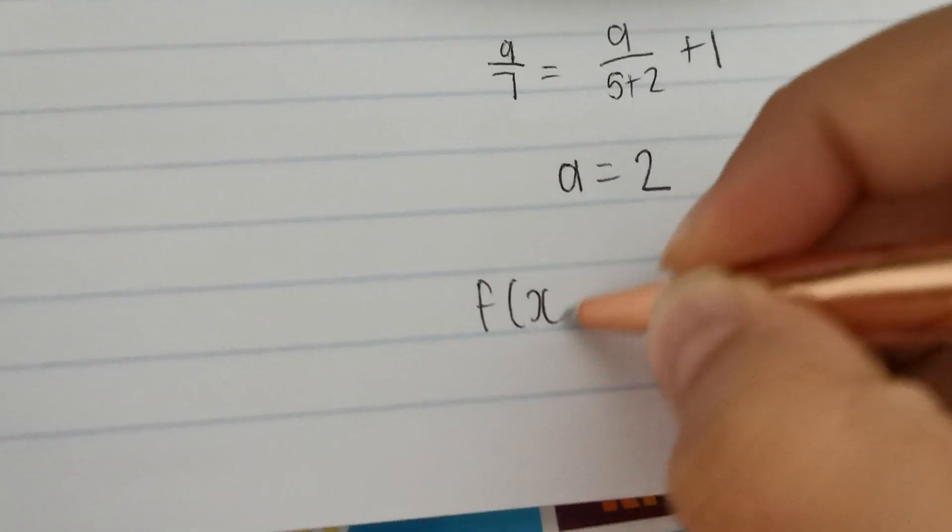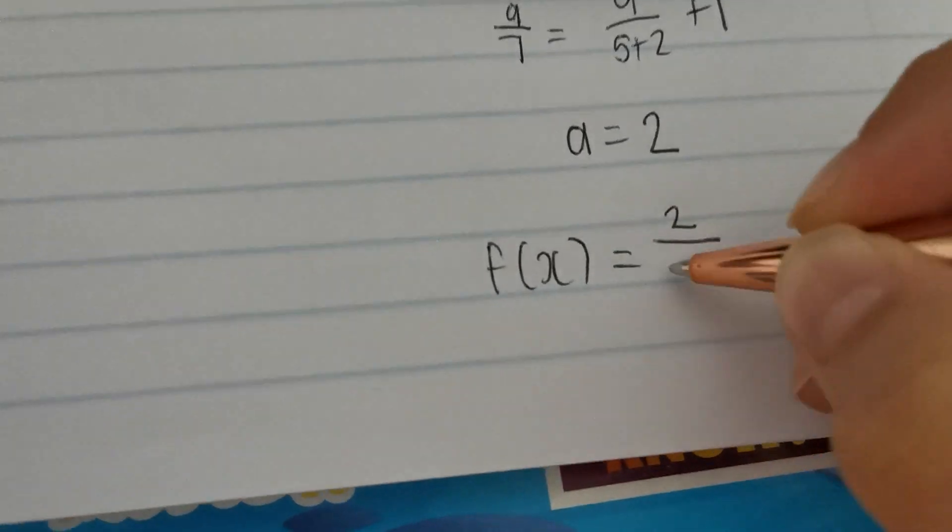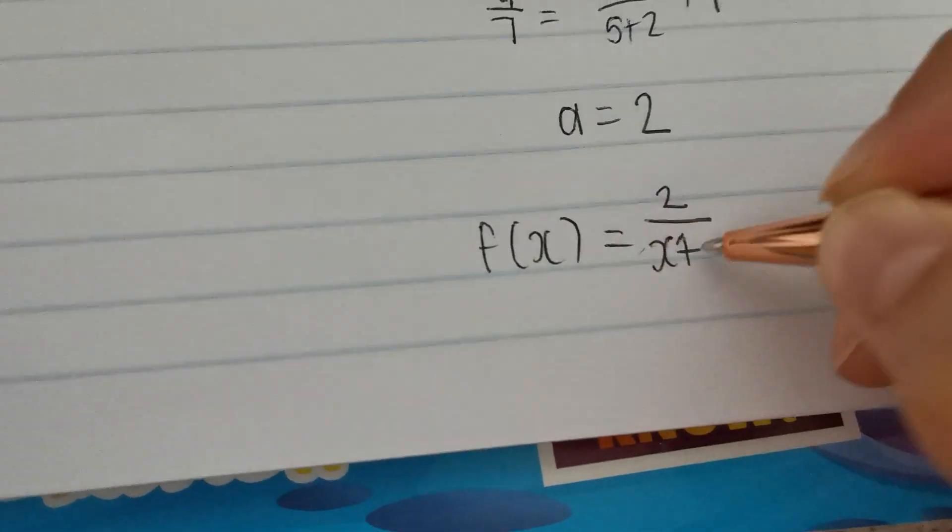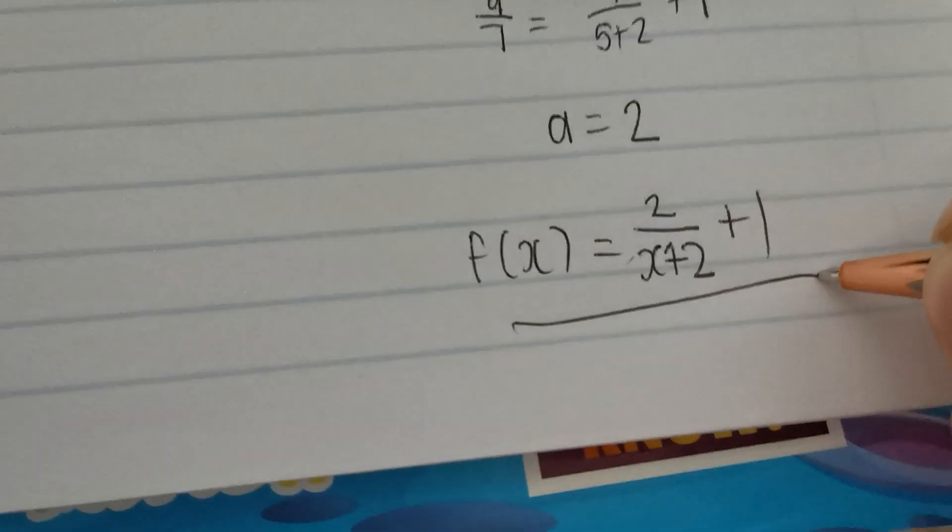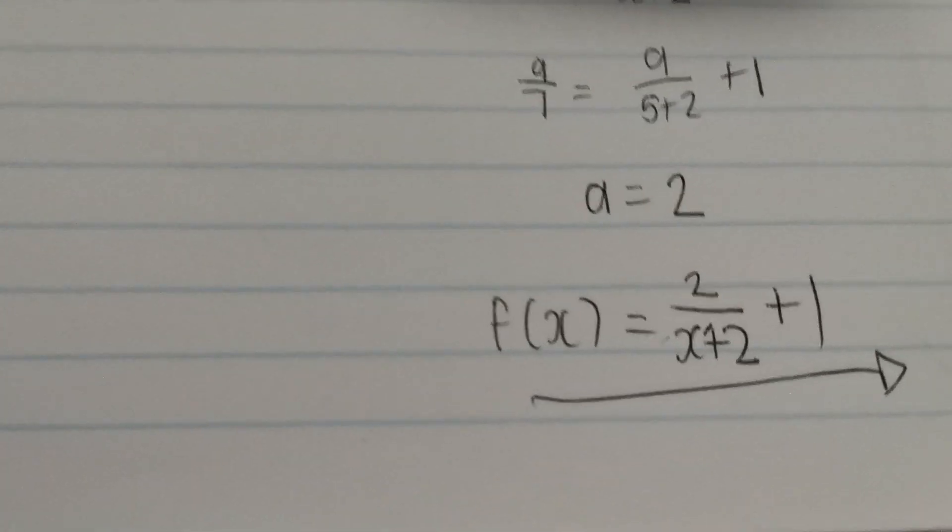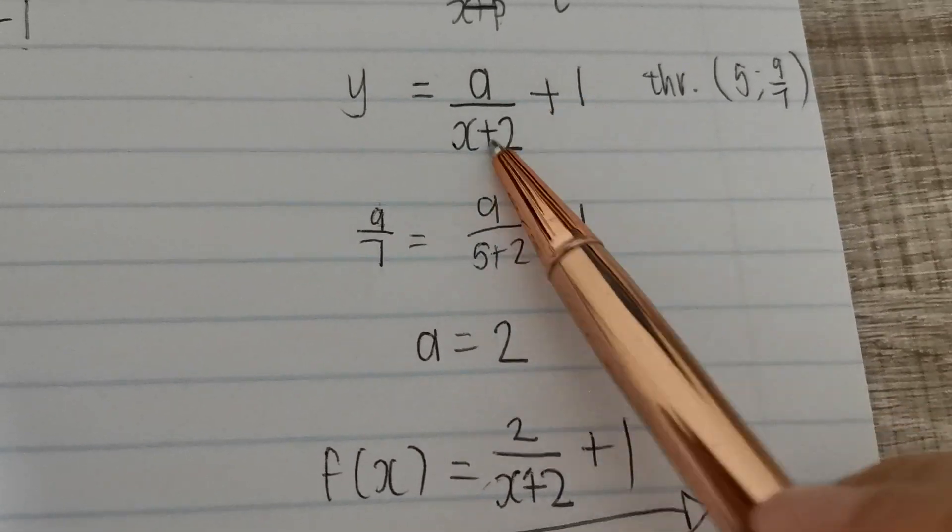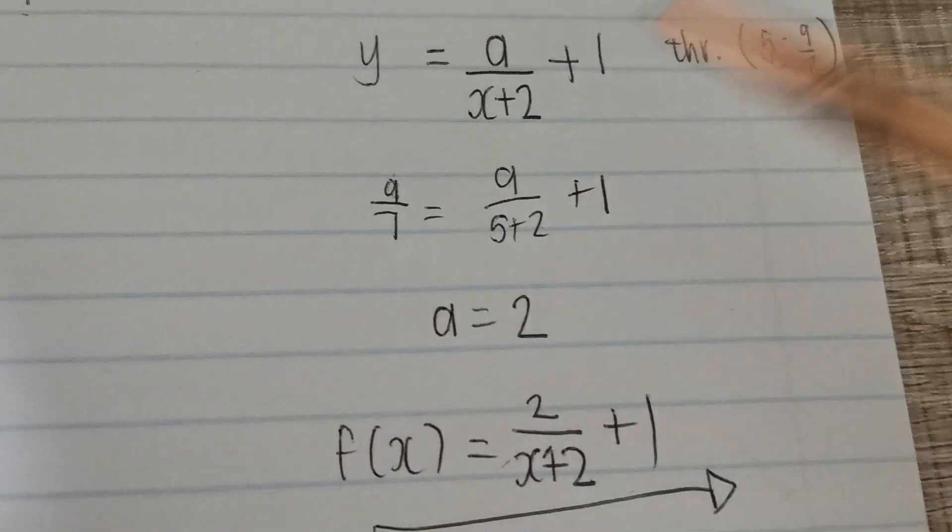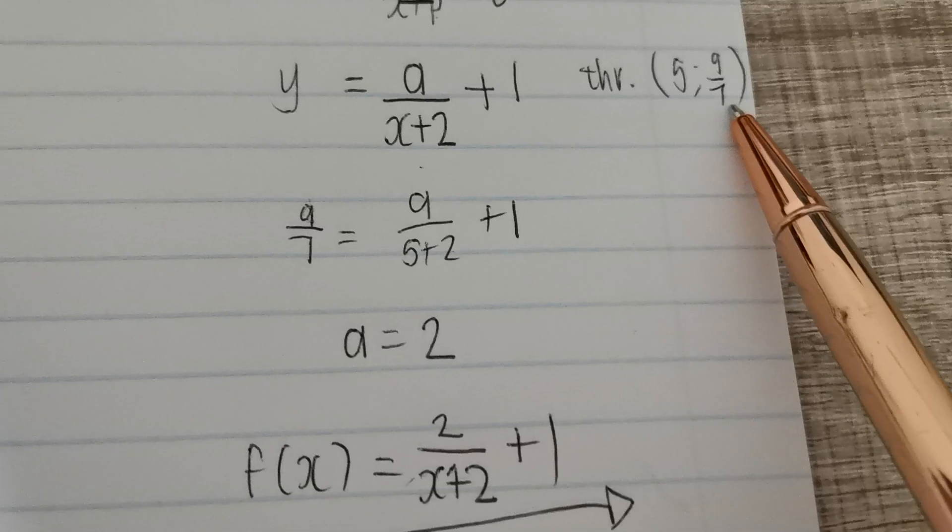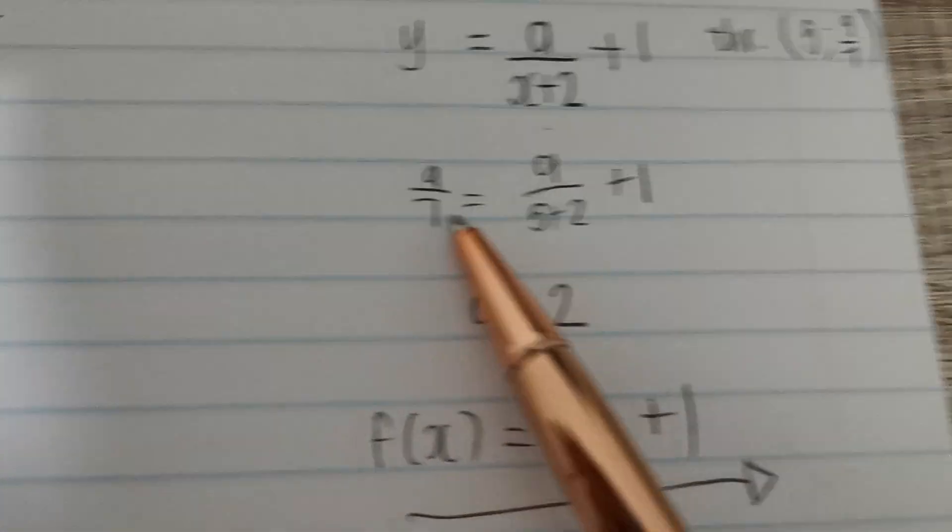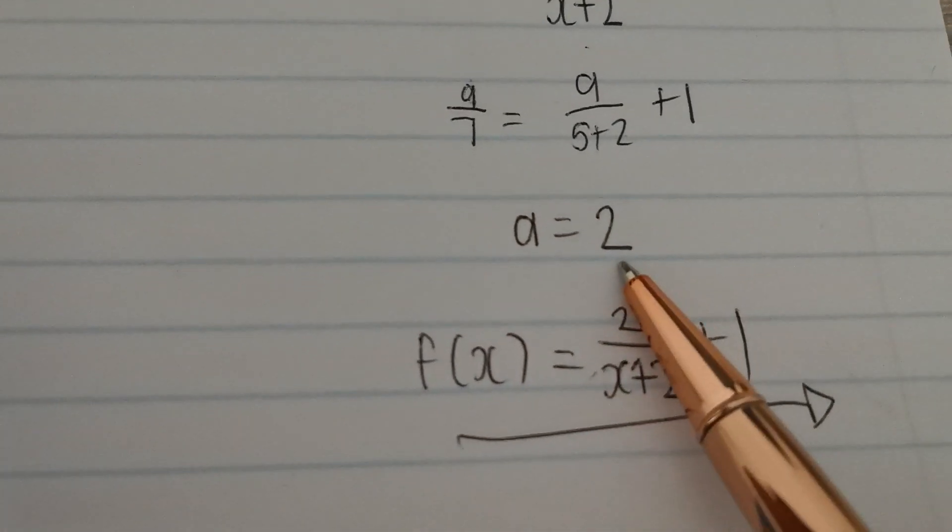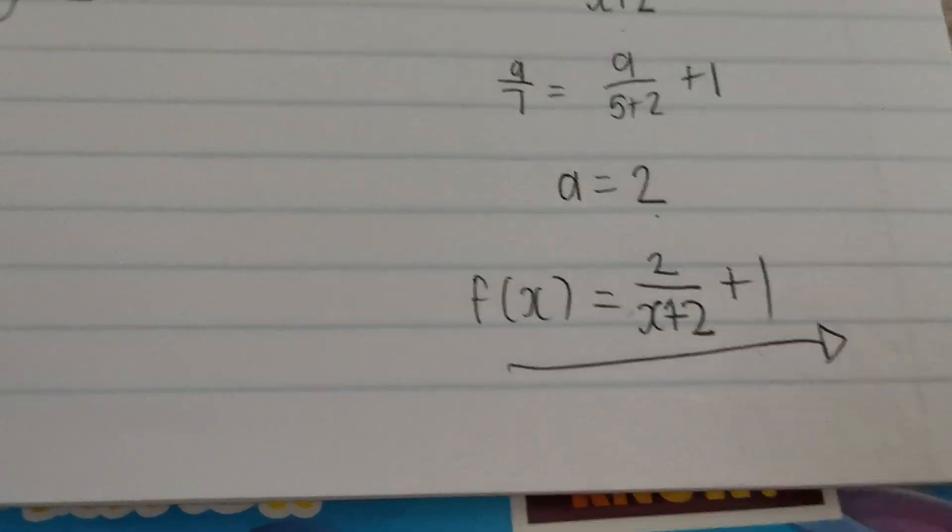And then you write down your equation. F over x is 2 over x plus 2 plus 1. That's what I mean by finding the equation. Let's recap quickly. Sub in the equations of the asymptotes into their places, or the asymptote values into their places. Sub it through a particular point. There's it. Solve for a, and get your answer.